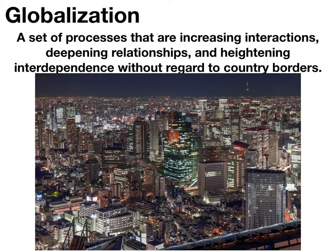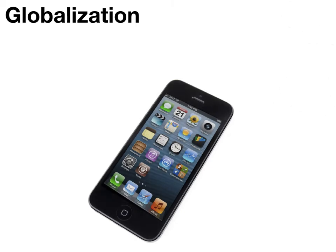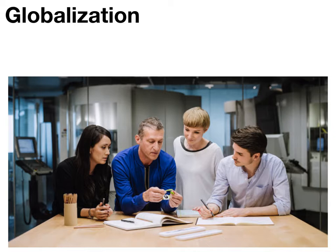The next term is globalization, and this is the beginning of the chapter. Globalization is defined as a set of processes that are increasing interactions, deepening relationships, and heightening interdependence without regard to country borders. Globalization is really a term that can be applied to every single chapter in the book. The example I'm going to give of globalization is the iPhone, which is a great demonstration of global interdependence.